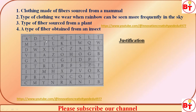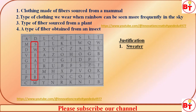You have to find the name of the clothing made from fiber sourced from a mammal. The best approach is to go first by row and then through the column. Here you can see that the clothing made of mammal fiber is sweater. You can find sweater in the grid — go through the row, and if it's not there, follow the column. The answer to the first question is sweater.